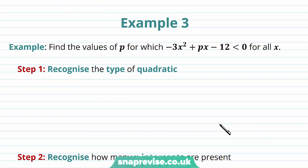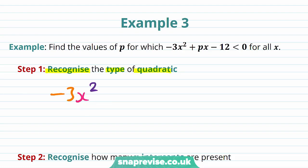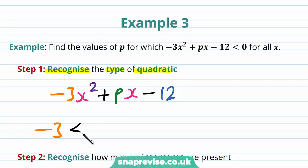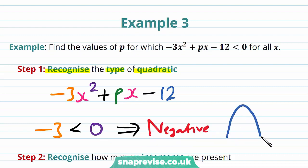Our last example asks us to find the values of p for which minus 3x squared plus px minus 12 is strictly less than zero for all x. The first step is to recognise the type of quadratic. Our a term is minus 3, which is strictly less than zero, and therefore it is a negative quadratic, so the shape is an inverted parabola.